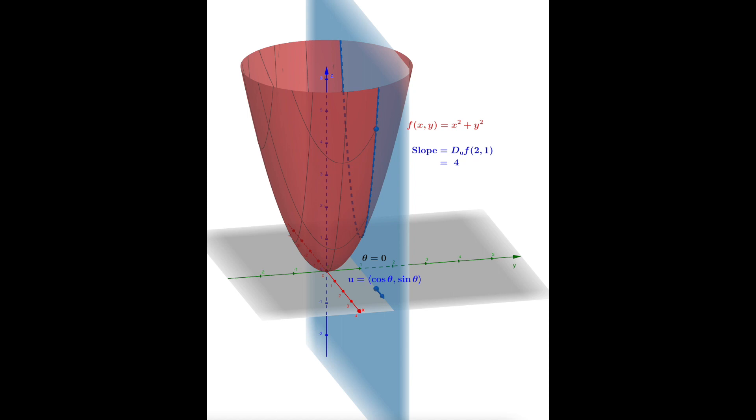In this video we're going to visualize the directional derivative of the paraboloid f(x,y) = x² + y² at the point (2, 1). Here the positive x-axis is red coming out at you, and the positive y-axis is the green one moving to the right.